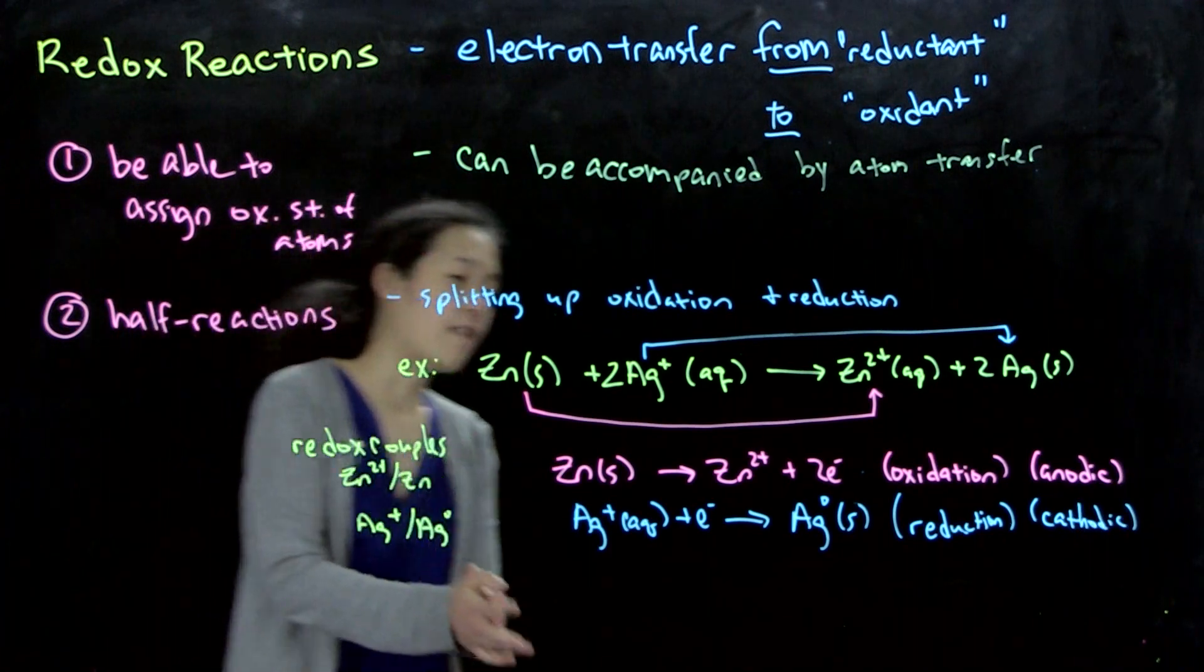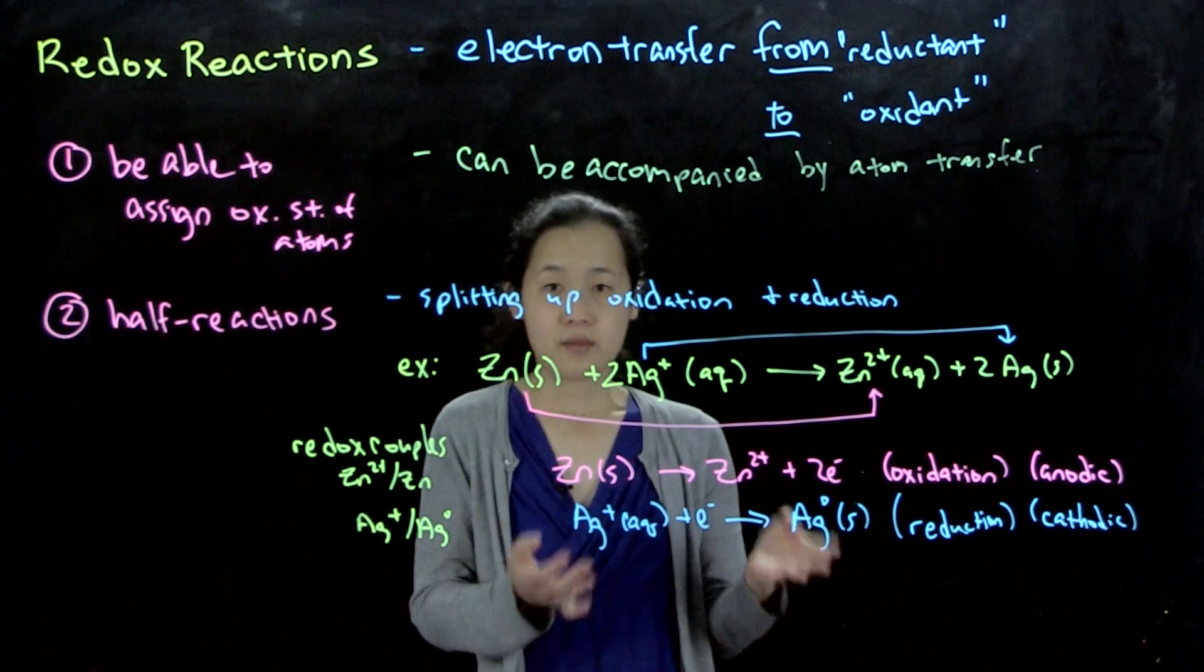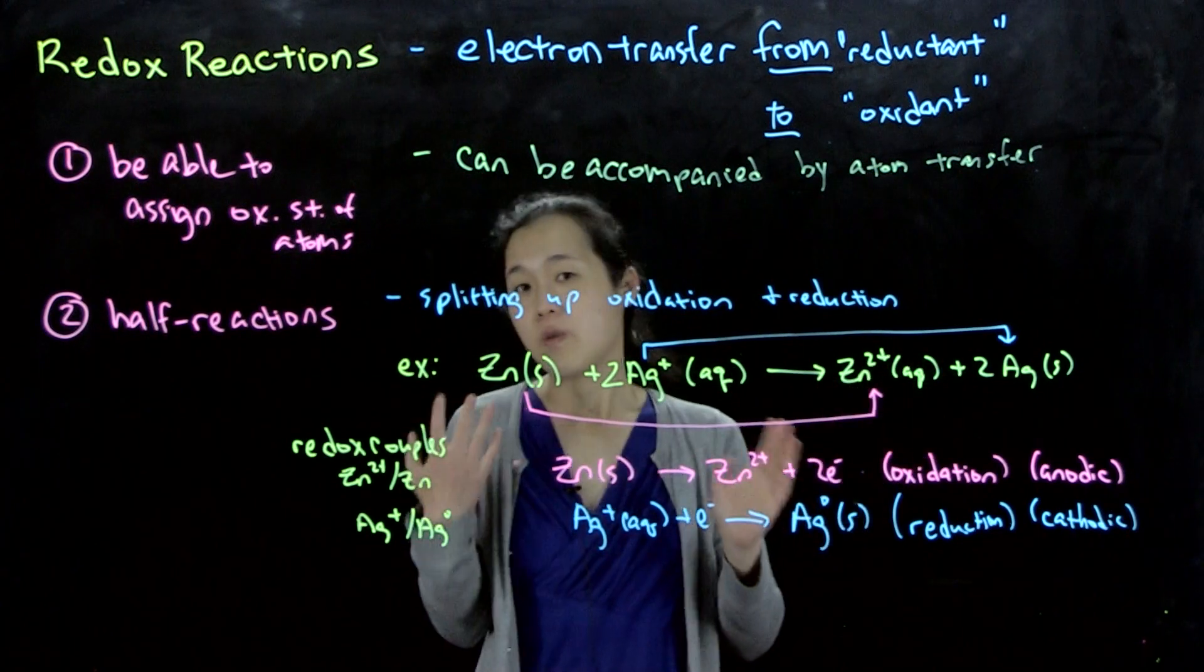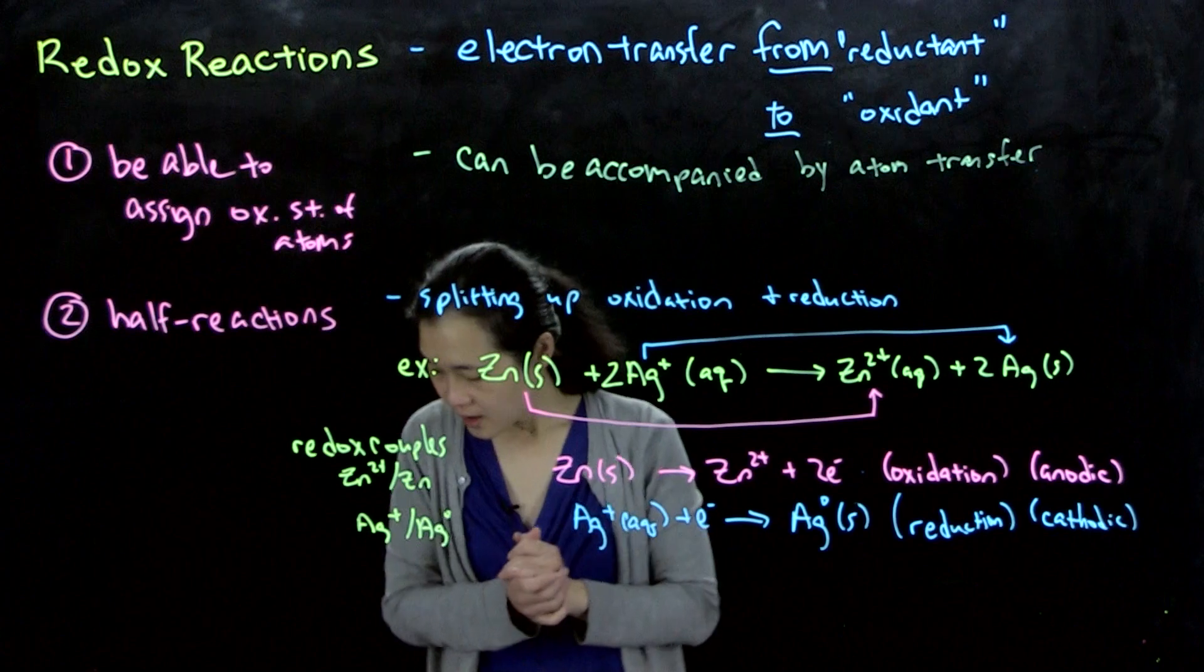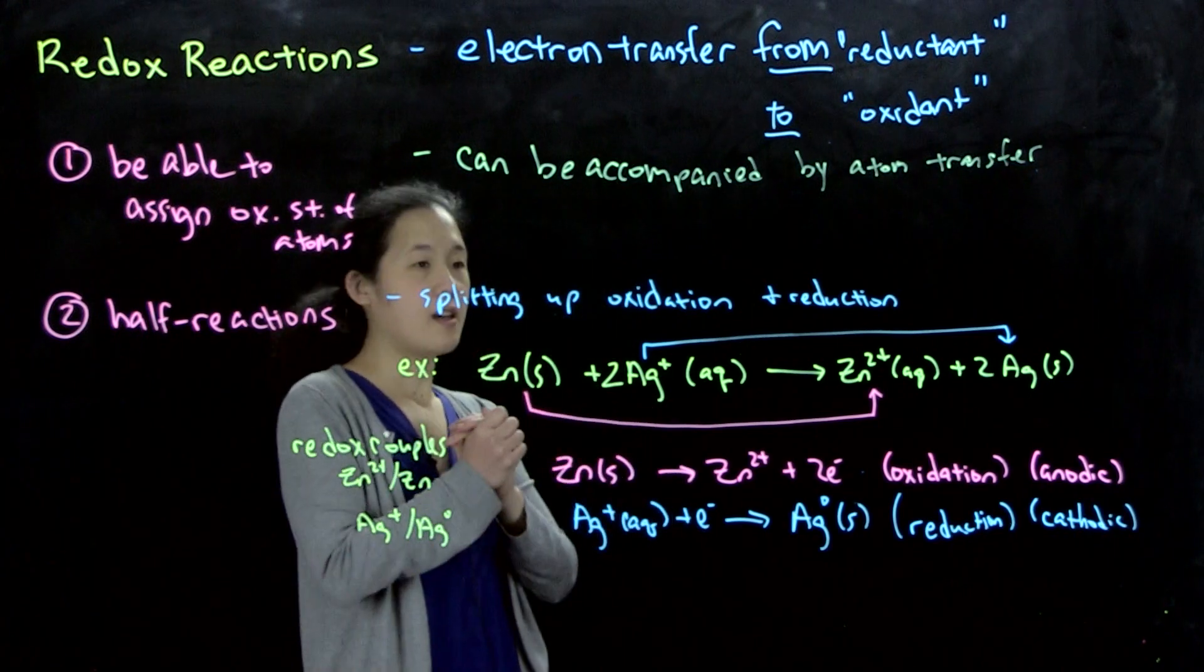Another thing is having the half reaction does not tell us the mechanism of how this reaction actually proceeds. We might know more from other processes if we see, for example, atom transfer. So these are all things to keep in mind for half reactions.